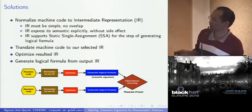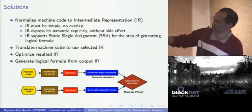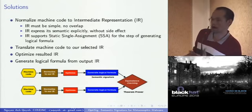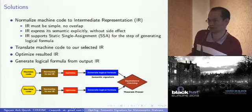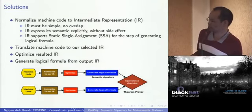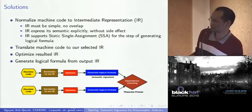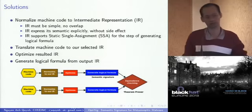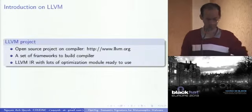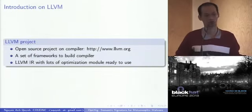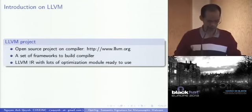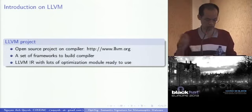The question is: which IR? We need the IR to normalize the code. The next step introduces the LLVM project, and you'll see why LLVM is important for OPTISIG. Anybody who uses Mac OS and compiles programs is already using LLVM, because nowadays compilers on Mac OS X all use LLVM behind the scenes. LLVM project is an open source project for compilers, offering a set of frameworks to build compilers very easily and quickly. The core of LLVM is the LLVM IR, and on top of it there are many optimization modules ready to use.